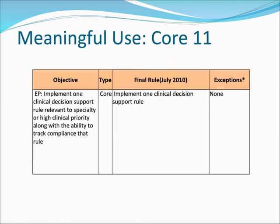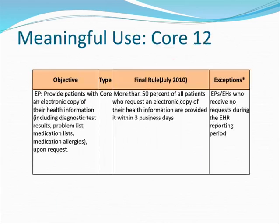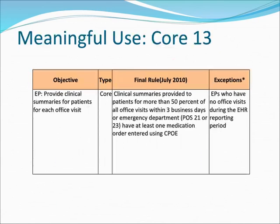Meaningful Use Core 11, Final Rule: Implement one clinical decision support rule relevant to specialty or high clinical priority, along with the ability to track compliance with that rule. Exception: None. Meaningful Use Core 12, Final Rule: More than 50% of all patients who request an electronic copy of their health information must be provided it within 3 business days. Exception: EPs who receive no such requests during the EHR reporting period.